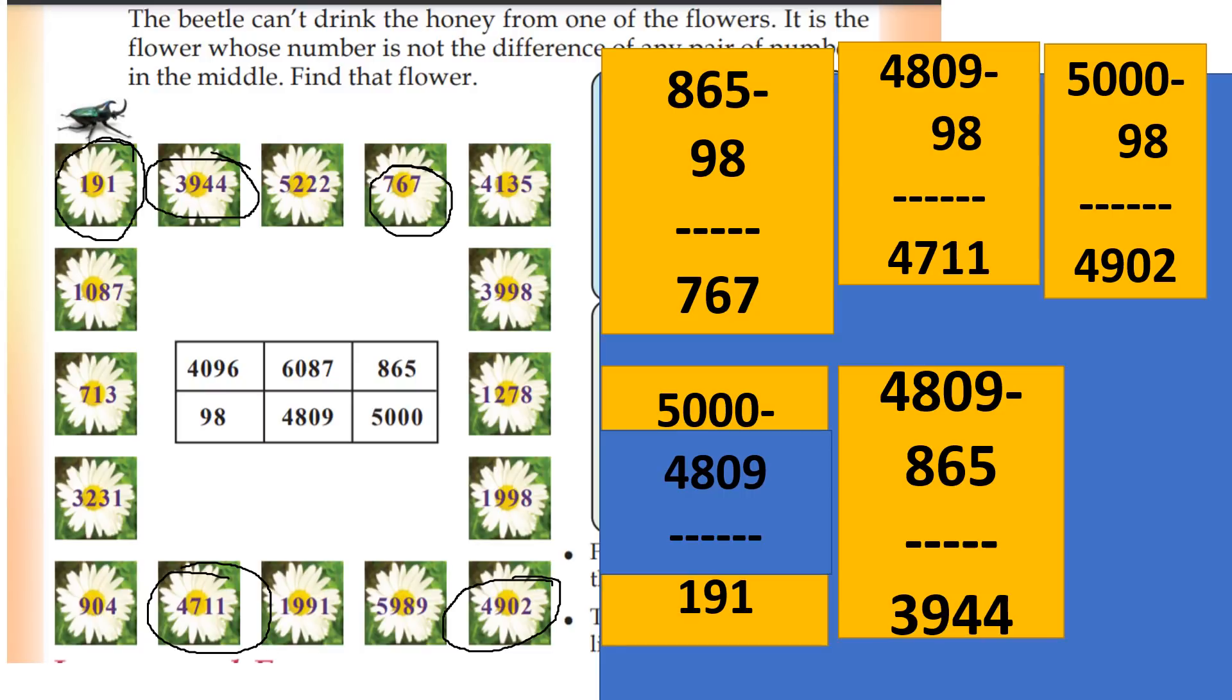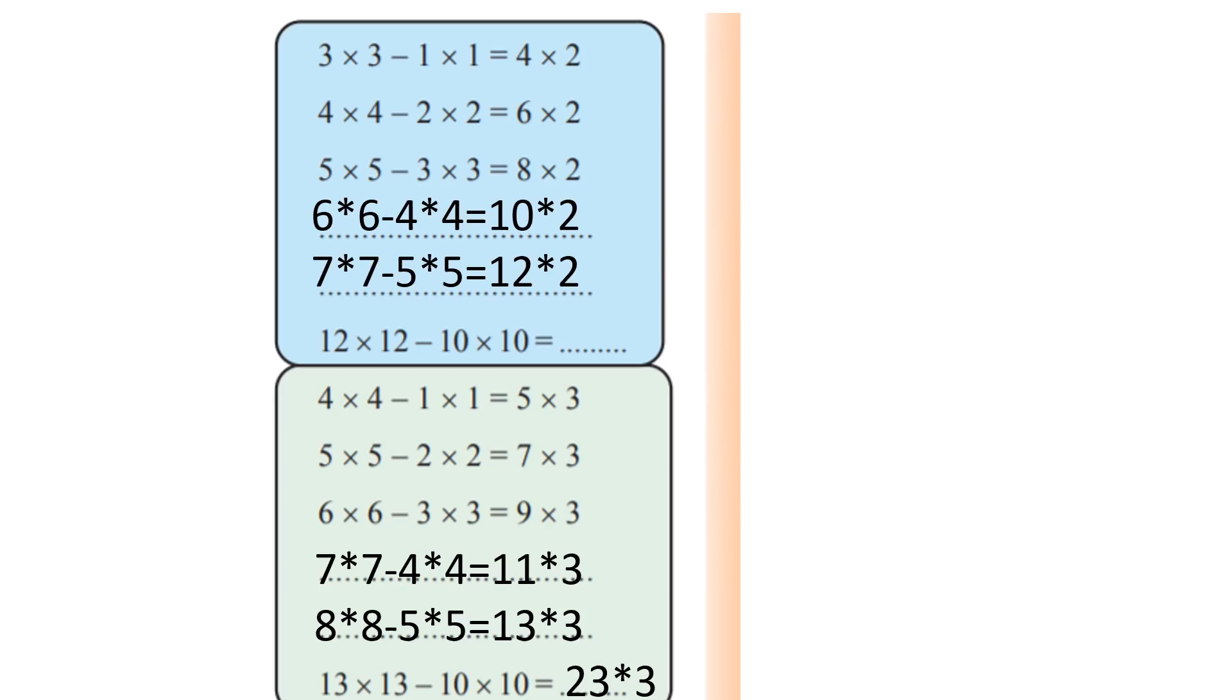Here we have the numbers. If you want to mark the flower, you will need to find which one cannot be formed. That flower will need the honey.